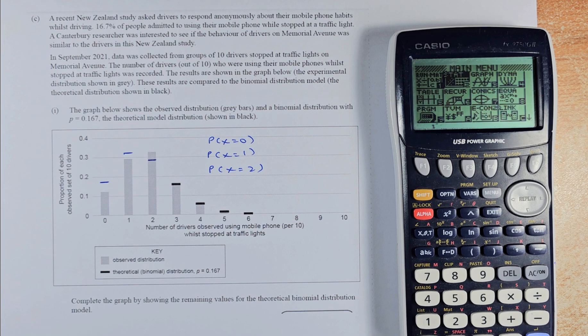A recent New Zealand study asked drivers to respond anonymously about their mobile phone habits while driving. 16.7% of the people admitted using their mobile phone while stopping at the traffic light. A Canterbury researcher was interested to see if this behaviour on Memorial Avenue was similar to the drivers in the New Zealand study. In September 2021, the data was collected from a group of 10 drivers stopped at the traffic light on Memorial Avenue. The number of drivers, N equal to 10, who were using the mobile phone while stopping at traffic light was recorded. The result shown in the graph below...